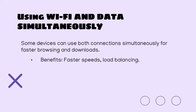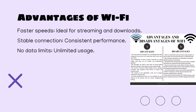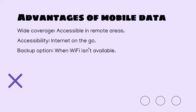You can also use Wi-Fi and mobile data simultaneously. This isn't available on every device, but some do allow it so you get faster speeds and can balance usage — using Wi-Fi for certain things so you don't get overcharged for data. Wi-Fi gives you faster speeds and unlimited usage, while mobile data is great if you're out in a remote area since you don't need to carry a router around. It's also a good backup option when Wi-Fi isn't available, such as if the power goes out.